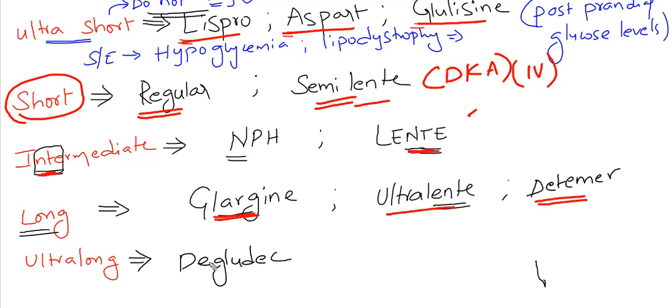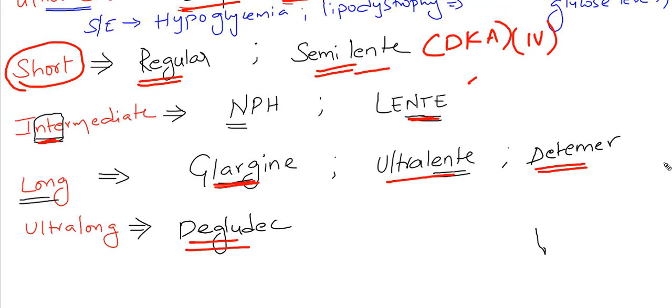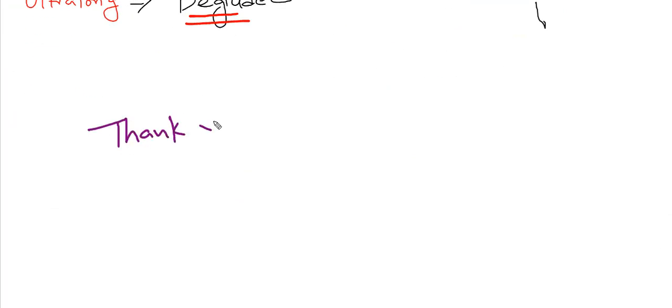Lente, semi lente, lente, ultra lente. Long acting consists of glargine, ultra lente, and detemir. This long acting insulin mainly controls basal glucose levels. Ultra long acting is degludec.